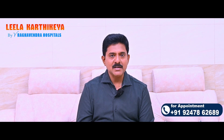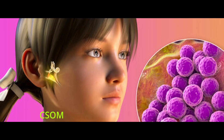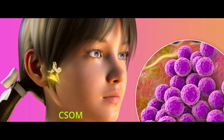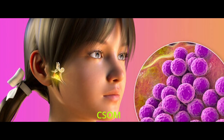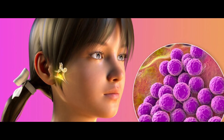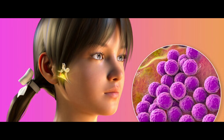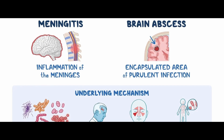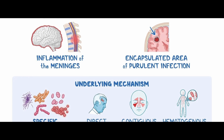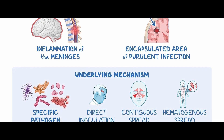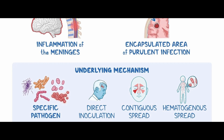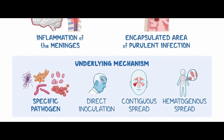Next, contiguous spread. It is a brain infection that can spread from the paranasal sinuses. So, to summarize, we can say hematogenous spread, contiguous spread, and trauma are the three routes of brain infection.